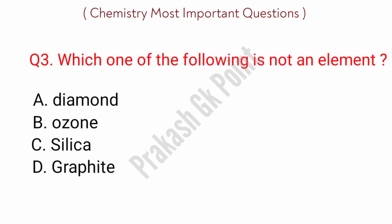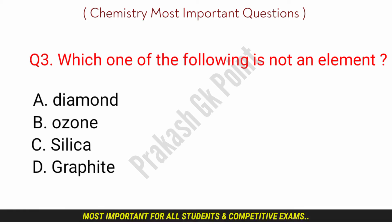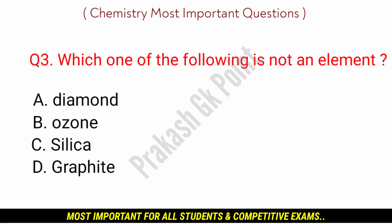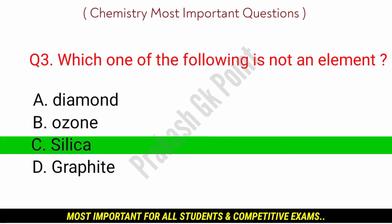Next question: which one of the following is not an element? Answer: option C, Silica.